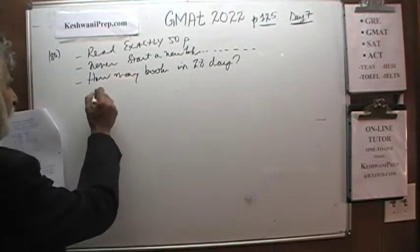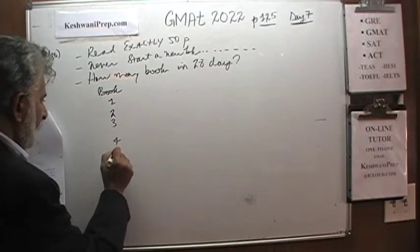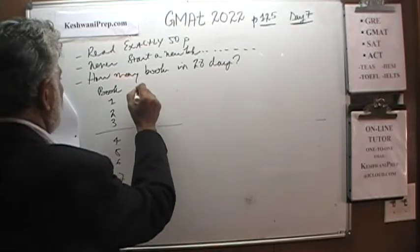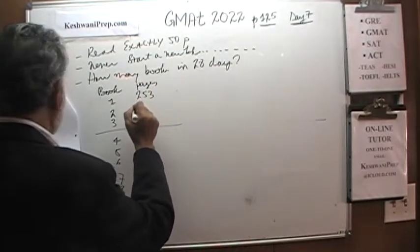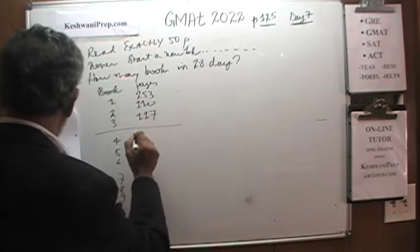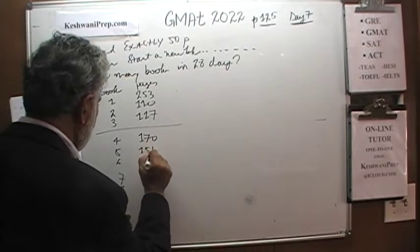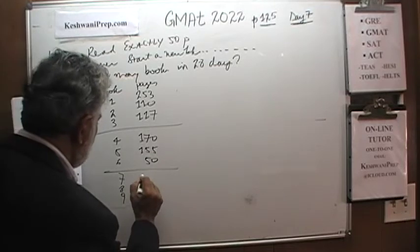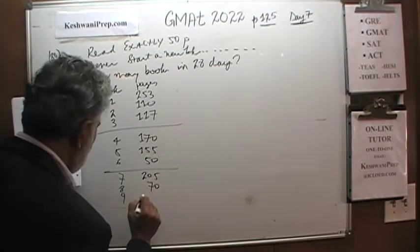We have taken out 12 books from the library. Here are the book numbers and their page counts: book 1 has 253 pages, book 2 has 110 pages, book 3 has 117 pages, book 4 has 170 pages, book 5 has 155 pages, book 6 has 50 pages, book 7 has 205 pages, book 8 has 70 pages, and book 9 has 165 pages.